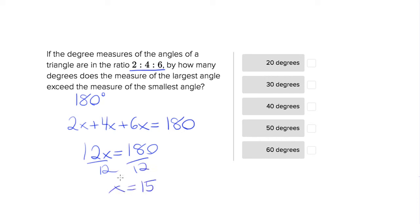So it might be tempting to choose 15, but luckily that's not one of our choices, because they're asking us how much bigger is this largest angle than the smallest angle. So this is our largest angle, our 6x, and our smallest angle is 2x.